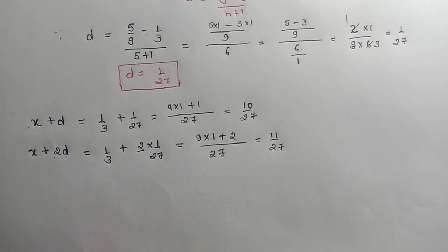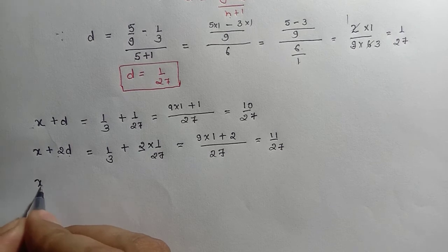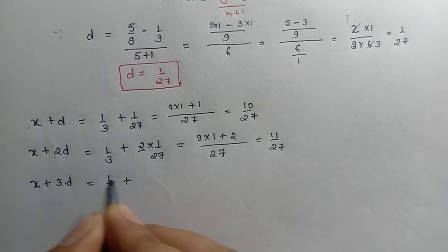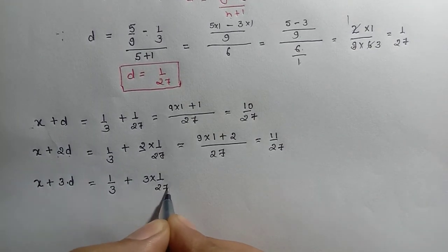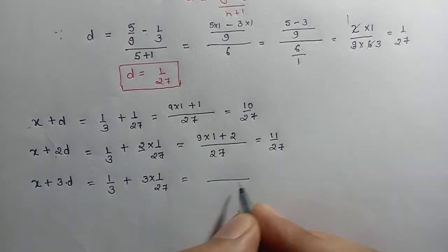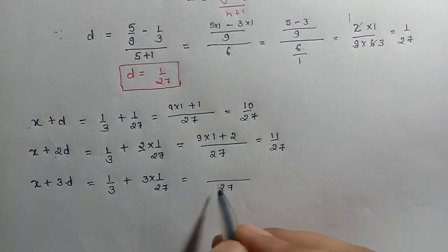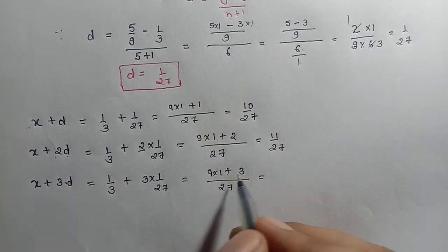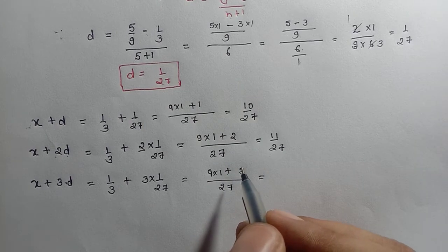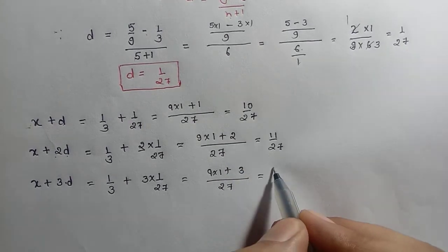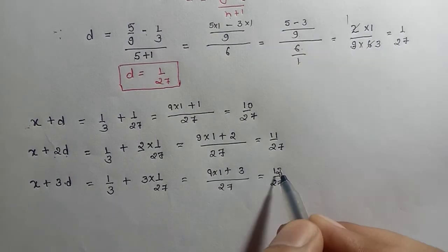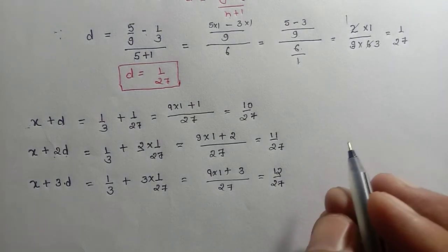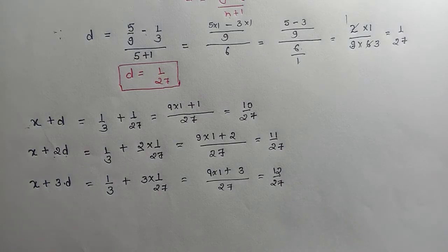अब हमें third rational number find करना है। तो third के लिए हम x + 3D करेंगे। x की value है 1/3 plus 3 × (1/27)। LCM 27 लेंगे: 27 ÷ 3 = 9, so 9 × 1 = 9; plus 3 × 1 = 3. So 9 + 3 = 12, third rational number = 12/27। इसे cancel कर सकते हैं, लेकिन मैं ऐसे ही रहने देता हूँ।